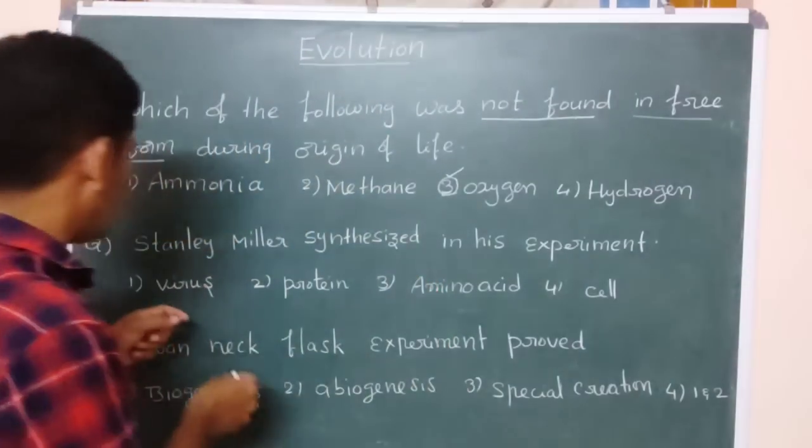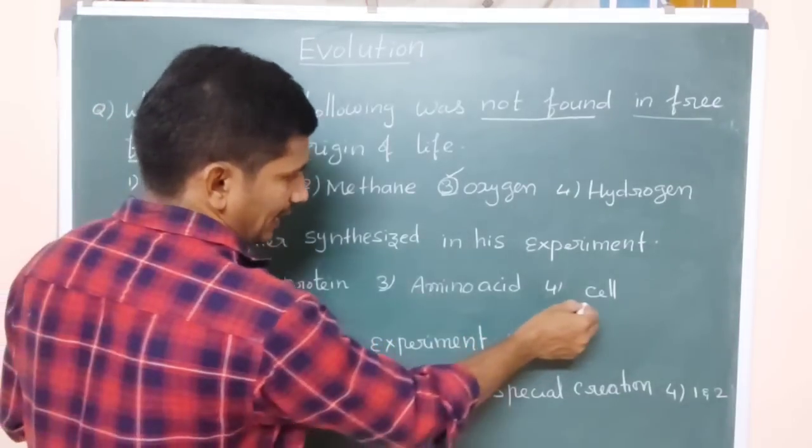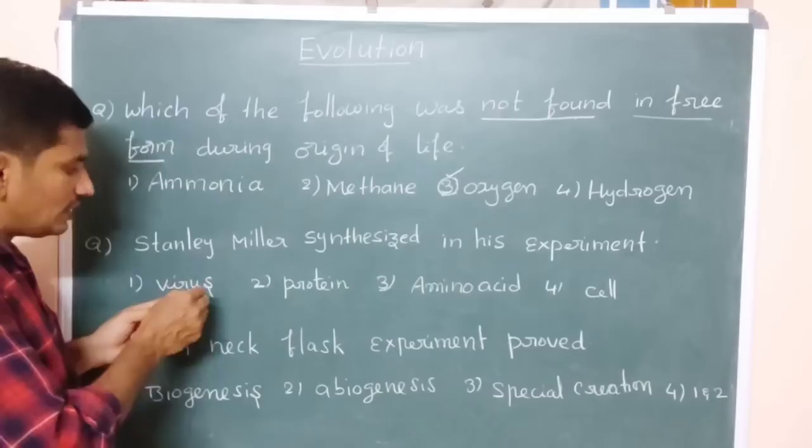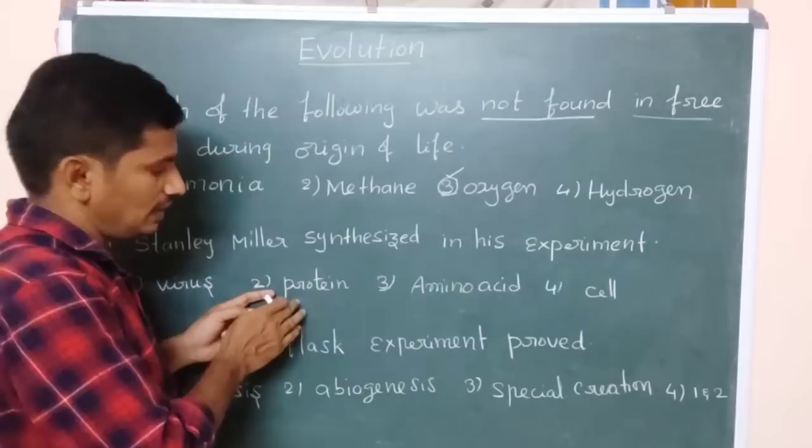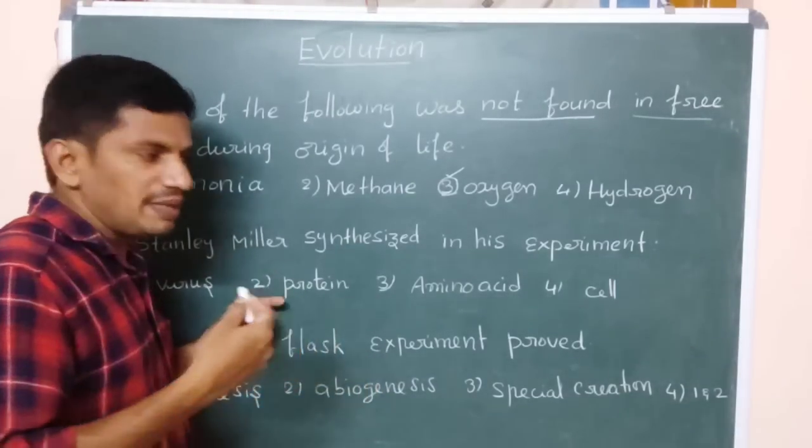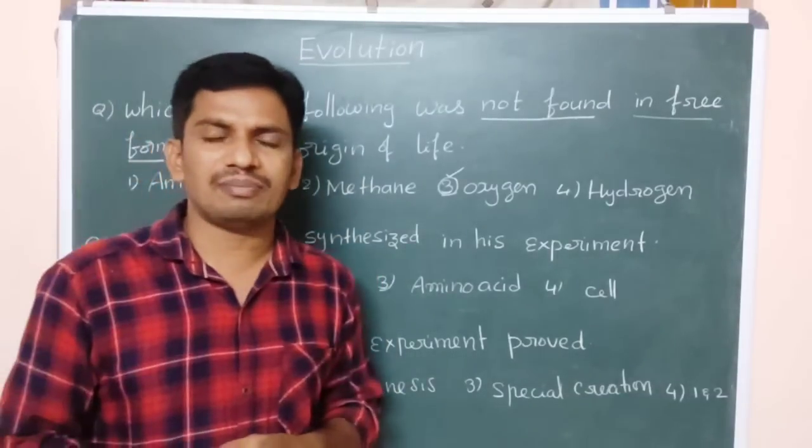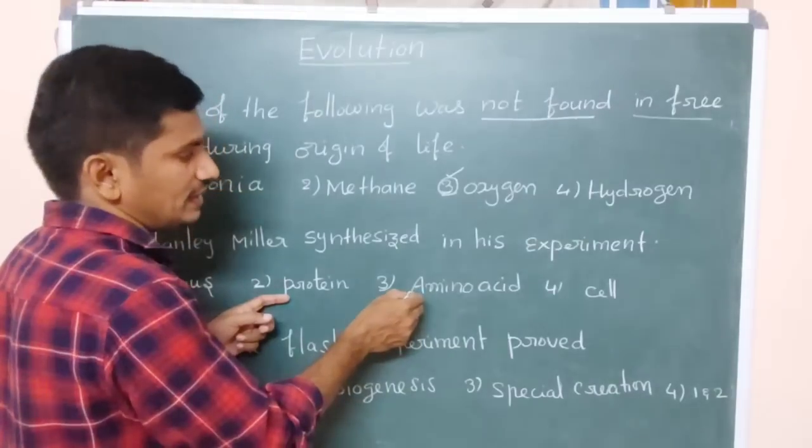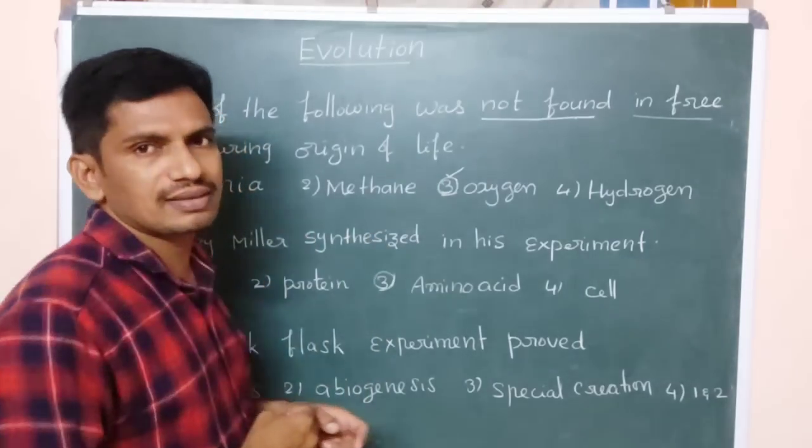In that what he found? Virus and protein and amino acid and cell. Here virus there is no chance because cell was not formed at the time. Proteins are the complex structures and there is also no chance. First that the pre-existing life here coacervates are there and microbians are there, protobionts will be formed. So the protein is not. Amino acid is the correct answer.